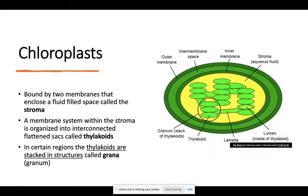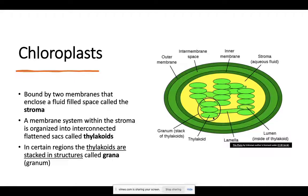Chloroplasts are made of three important structures. First is the stroma, which is a two-membrane-bound fluid-filled space. Then you have a series of interconnected flattened sacs called the thylakoid. The thylakoids stack to form structures called granum. So the stroma is the inner membrane fluid-filled space, the thylakoids are flattened sac-like structures, and when they stack they form granum.